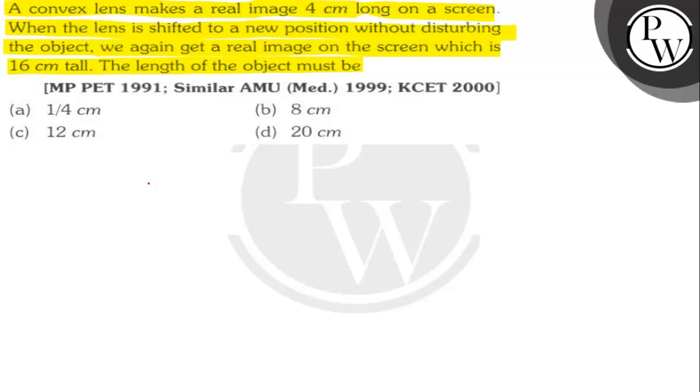It is given in the problem that a convex lens forms a real image 4 cm on the screen. The lens is then shifted to a new position and the image formed is 16 cm tall, and we need to find the length of the object. Let's draw the diagram.